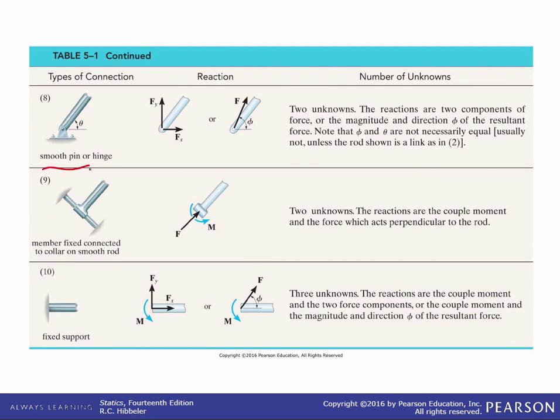We have a smooth pin or hinge we already did this one earlier this guy can rotate about that point so it can't support a moment but it prevents translation in the x and y direction. We have a member fixed connected to collar on smooth rod now this says fixed so it can't move in any direction it can't move in this direction so therefore you have to apply a couple moment as well it can support a couple moment and the force as well. And here's the fixed support and we already did this one earlier.